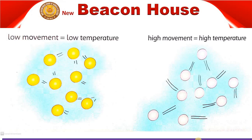Looking at the screen towards the left side, there is low movement — yaani ke molecules slowly move kar rahe hain, so we say temperature is also low. And on the right side, this is the high movement. This molecule's movement is much faster than the slow movement side, representing high temperature.